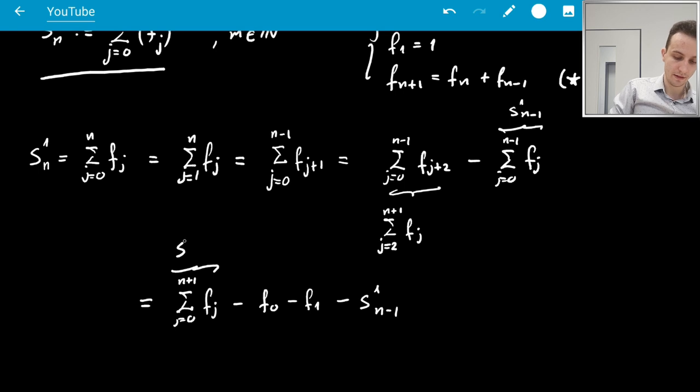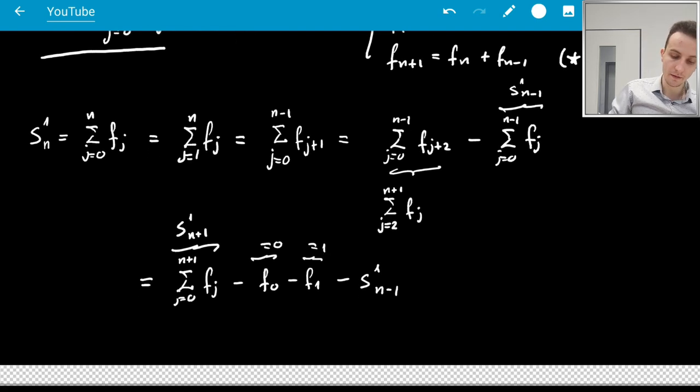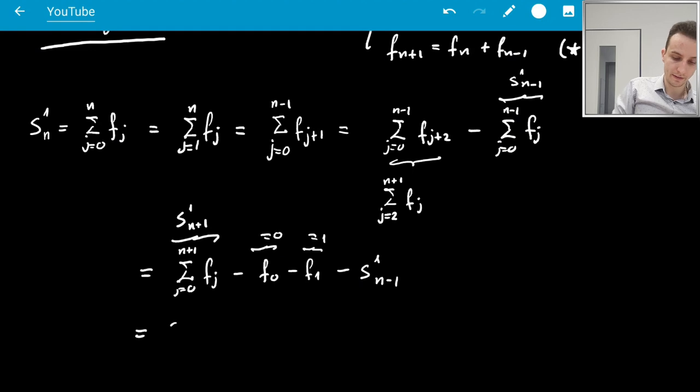Now, this one is just S_1(n+1). This is equal to 0, and this is equal to 1. And now, I get the difference S_1(n+1) minus S_1(n-1) minus 1.